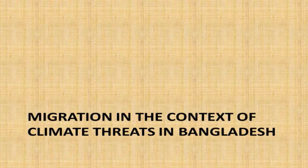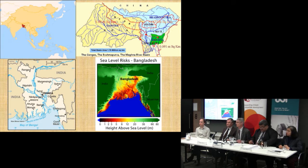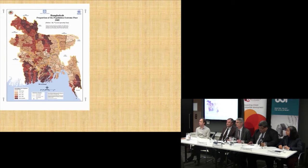Now turning to Bangladesh. It's a giant delta that receives the waters from three main rivers — the Ganges, Brahmaputra, and Meghna. You can see Dhaka right in the middle of the country. Being a delta, a lot of the country is very low and susceptible to sea level rise.